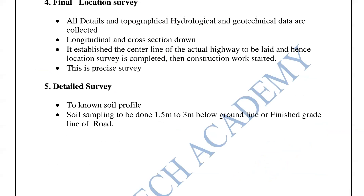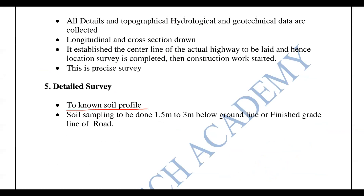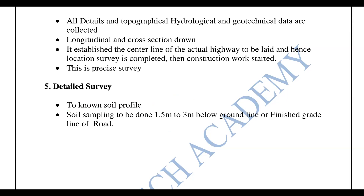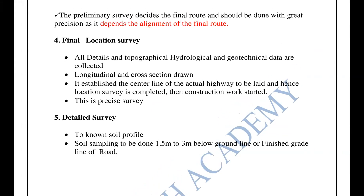The detailed survey gathers the profile of the soil. Soil samples are taken from 1.5 to 3 meters below the ground line and tested. This completes the first alignment and the engineering survey for the highway. Next, we look at the types of survey.